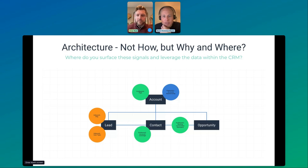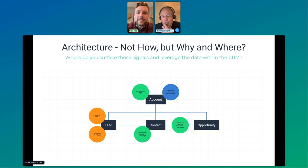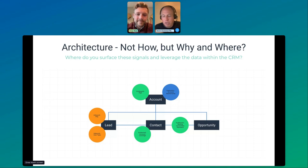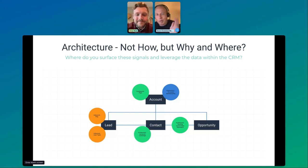Any questions? I wanted to pause and check the chat. I'm curious about something that always comes up: if there's a rule of thumb for how to take your PLG motion and move it to PLS — what's a good rule of thumb for when you should start to engage with an enterprise account? Where do people even get started to test out whether this motion is going to work?